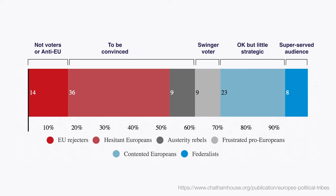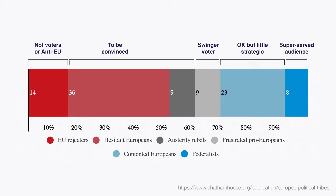Just after them, big segments that could be convinced are hesitant Europeans or austerity rebels. People who might decide to vote for anti-EU parties, decide not to vote, or decide to vote for a party that agrees with them. These people are interesting because they represent almost a majority of the voters and could be very strategic in order to increase participation in the European election.